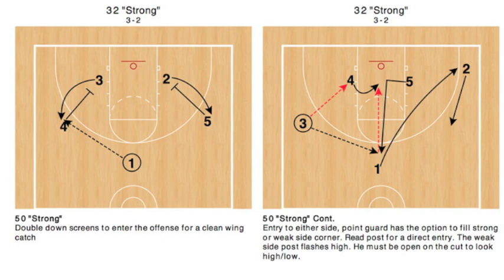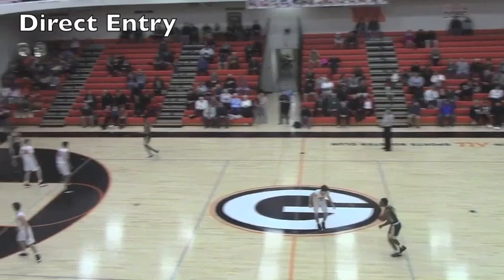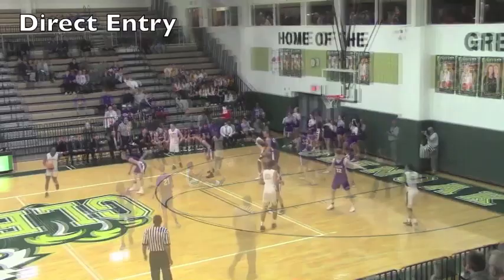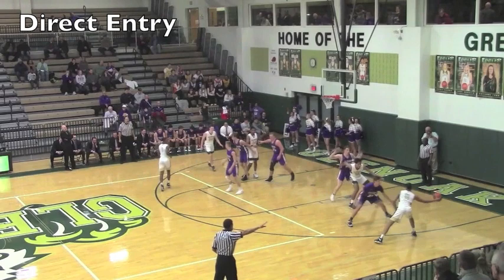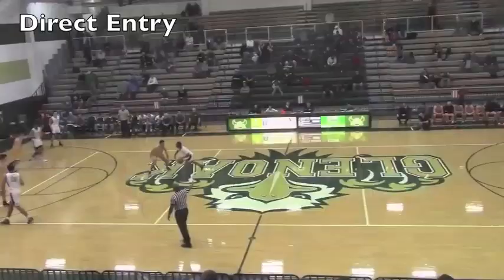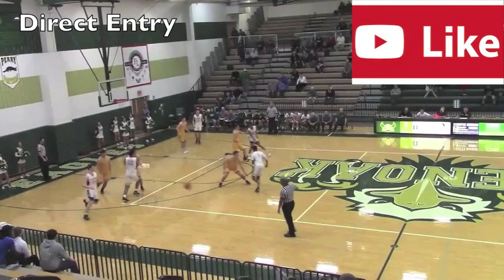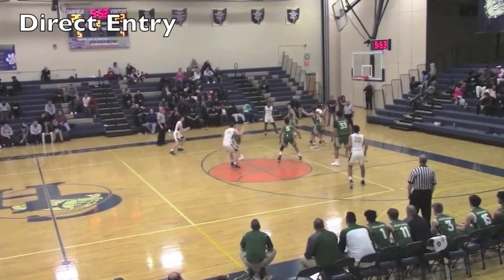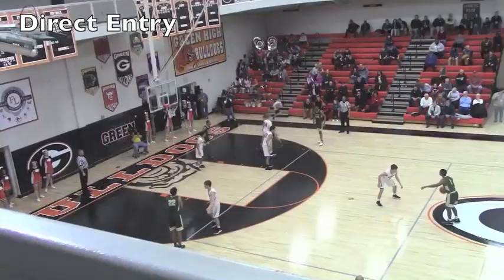In today's video we look at a continuity action geared around getting the ball inside. A post player can get three decent looks on the inside in one play. It is designed around having a system of play that includes two big men featured inside. Having two big men allows the ball to be entered to either side, and the post player on that side the ball goes to is the featured player. If you only have one big man, you would just make sure the plays are entered to the side of that player each time.